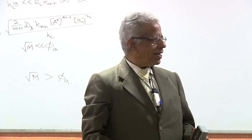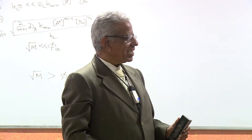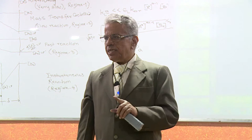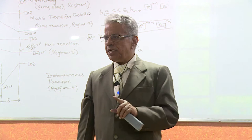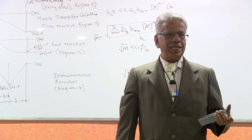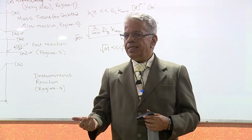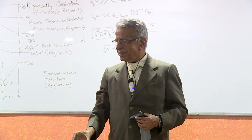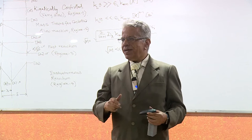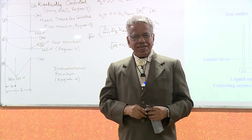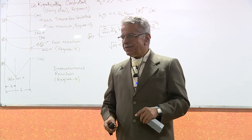The second one is called the wetted wall column. What is done - imagine a rod or a hollow pipe. The liquid is introduced from the bottom and when it comes to the top, it overflows and falls like a film on the outside of the cylinder. This is enclosed in another cylinder where gas enters and leaves. The cylinder area pi·d·L is the known area, and by changing the liquid flow rate or the film velocity - the downward velocity - we can change KL. That is another model.